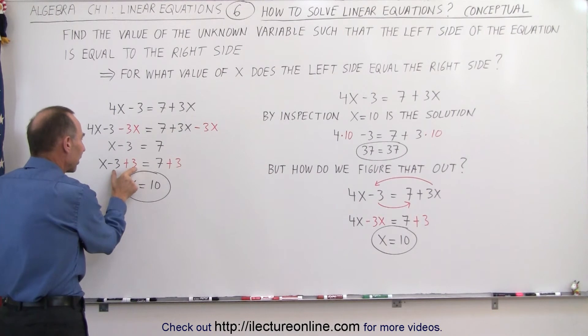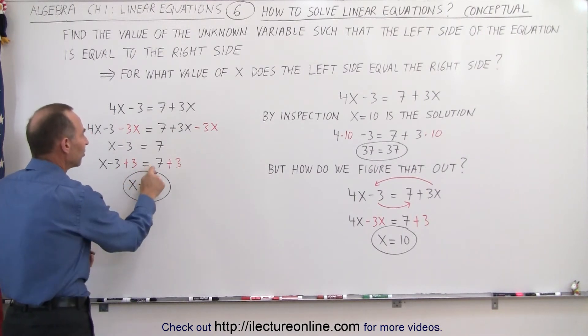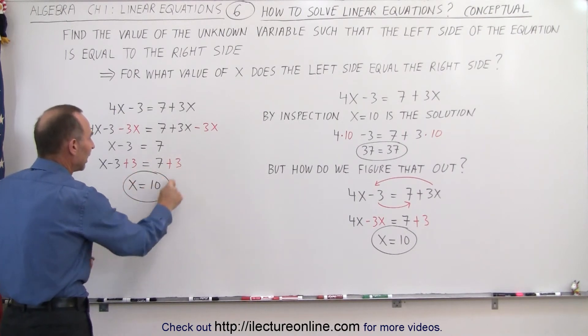This way, we get rid of the 3 on the left side, because minus 3 plus 3 is 0, so we just have an x left on the left side, and 7 plus 3 is 10, so now we know that x equals 10. Again, the solution to our equation.